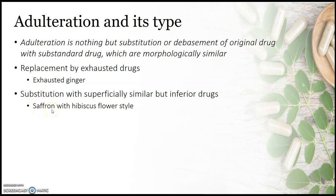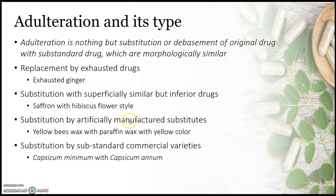The third type is substitution by artificially manufactured substitutes. For example, yellow beeswax obtained from honeycomb has been replaced or adulterated with yellow-colored paraffin wax, which is an artificially manufactured material.